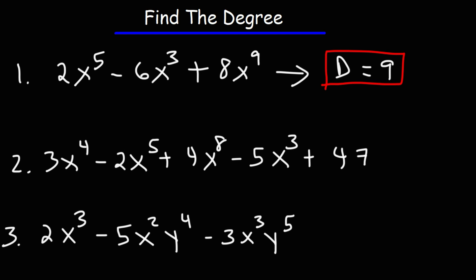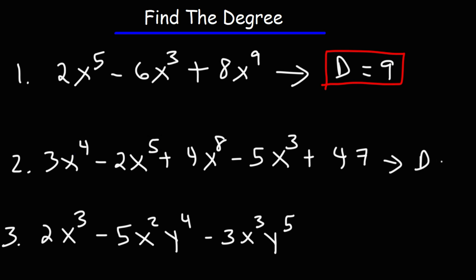Now for number 2, looking at the exponents, we have 4, 5, 8, and 3 — so 8 is the highest one. So this polynomial, we could say it's degree 8.